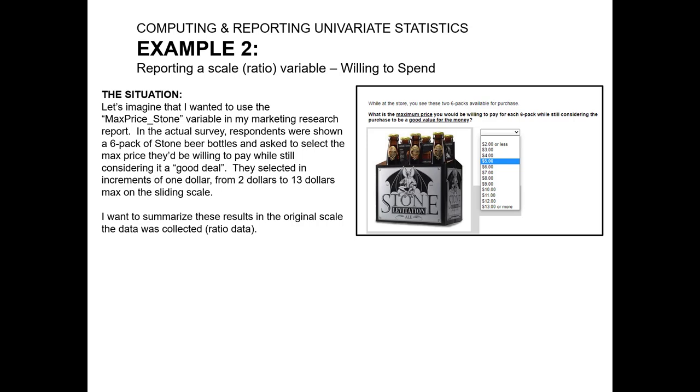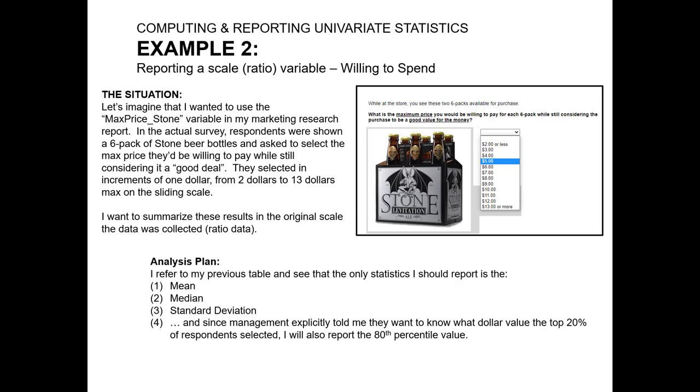I'm going to summarize these results using the original scale that the data was collected in. Since dollar amounts have a real absolute zero, in other words, $0 means something, this is ratio level data. In my analysis plan, looking back to my cheat sheet, that implies that I should report the mean, the median, and the standard deviation.